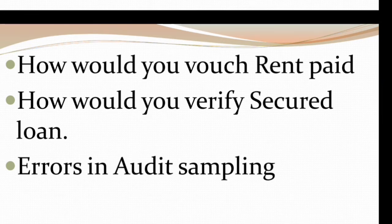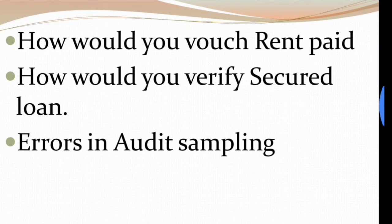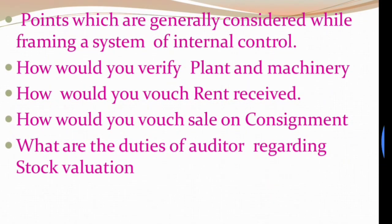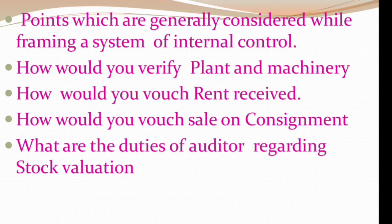The next question is errors in audit sampling — what types of errors can occur in audit sampling. The next question is: what points are considered while framing a system of internal control? Then: how would you verify plant and machinery? As I mentioned, checking assets is verification. In place of plant and machinery, different assets can also come, so you need to write details about that asset.